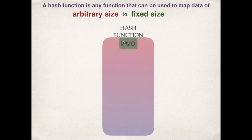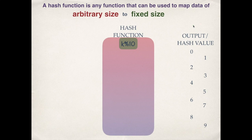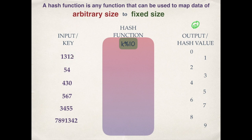Let's take an example of a hash function: k mod 10. The output of this function is the remainder when k is divided by 10. When a number is divided by 10, there are 10 possibilities: 0 to 9. So we have fixed the output to these 10 values, while the input can be any number — there is no upper limit. This function k mod 10 is a hash function because it maps the input, or key, of arbitrary size to these 10 values.